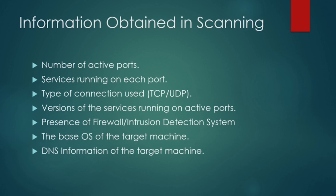Information that can be obtained from scanning. The first information which we can obtain after scanning a target network is the number of active ports. Then on each of these ports, we can find the services that are running. We can find the types of connections used, which can be either TCP or UDP, the version of the services running on each active port, the presence of a firewall or intrusion detection system as a defense mechanism on the target machine, the base operating system of the target machine, and lastly the DNS information of the target machine.